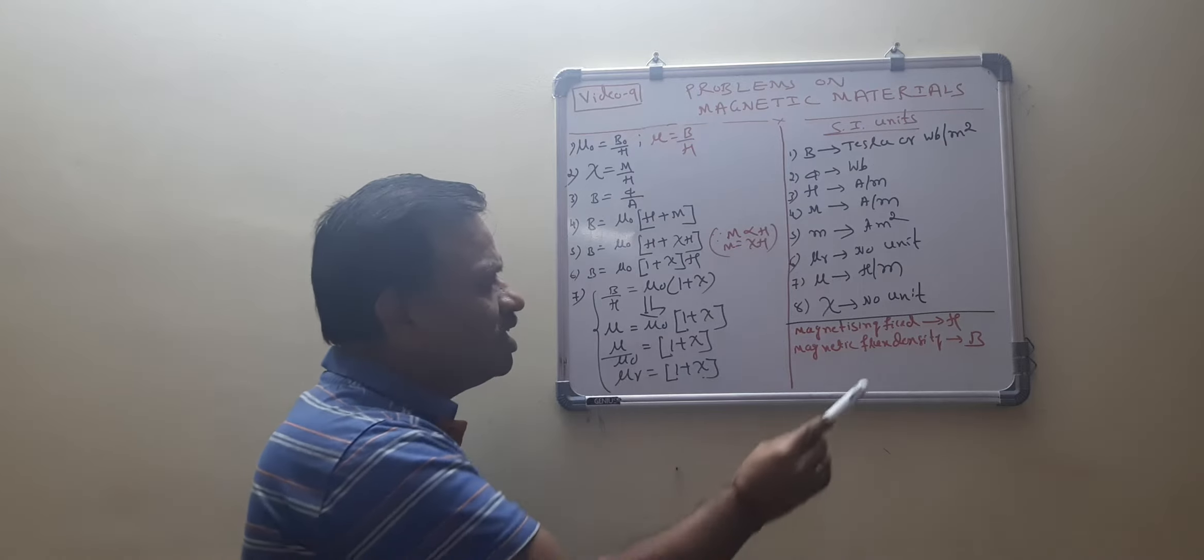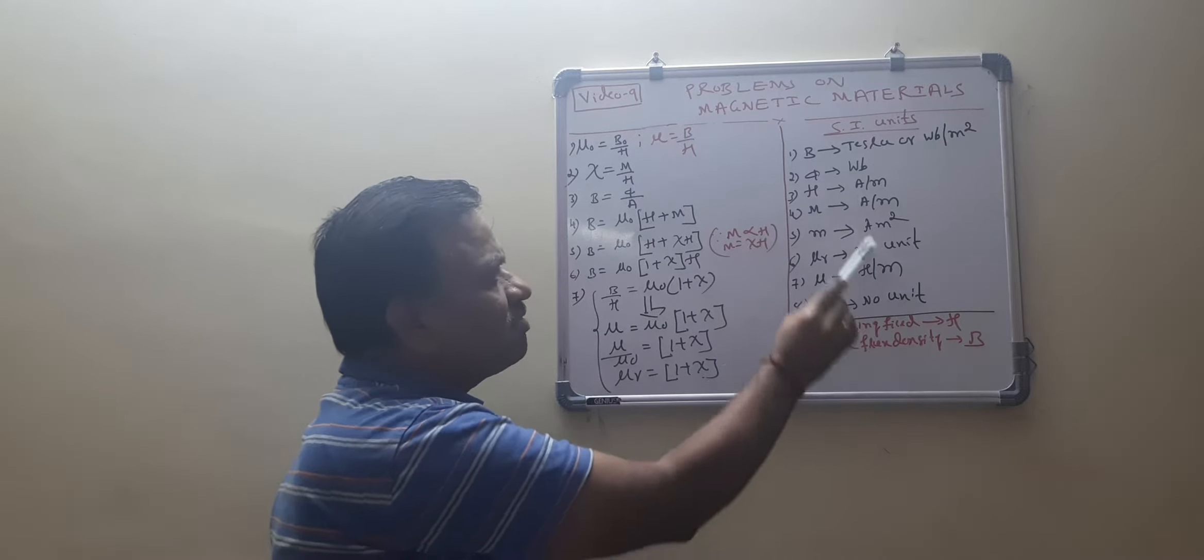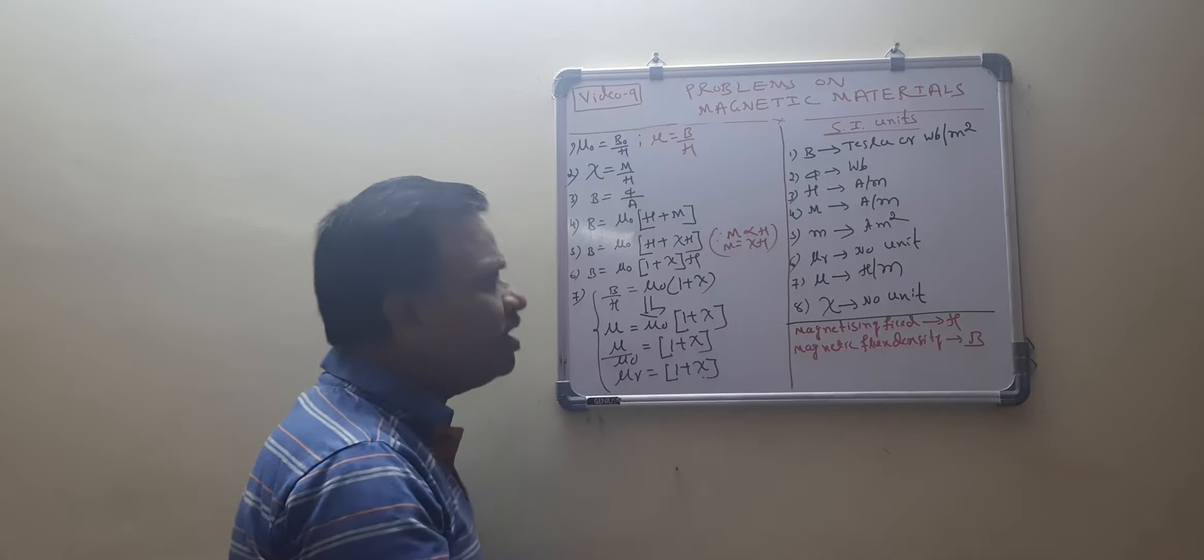H is the unit is what? H is nothing but the magnetizing field. What is the unit? Ampere per meter.